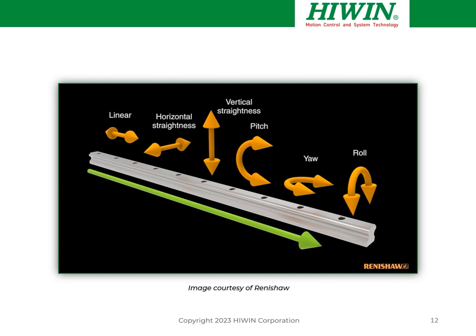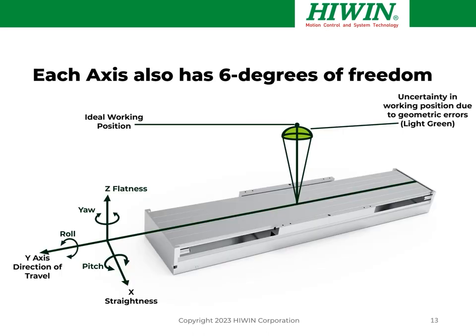Here's another illustration of the six degrees of freedom. Anything other than straight-line linear motion results in positioning errors in the overall motion system. We can see travel along a linear guideway bearing showing the desired direction of travel, horizontal and vertical straightness, and the three angular components — pitch, yaw, and roll. When we build an axis from these components, that axis itself also has six degrees of freedom. Linear stages have errors that result from the combination of component tolerances used to build the stage, creating some uncertainty in your working position due to geometric errors.